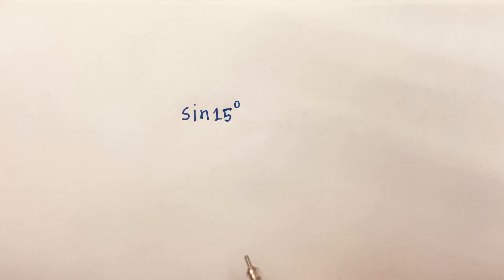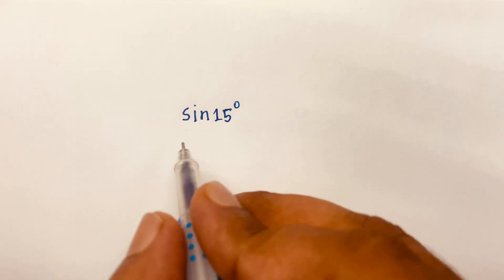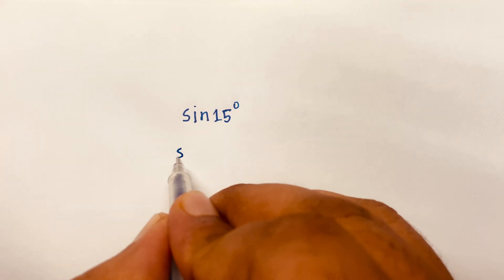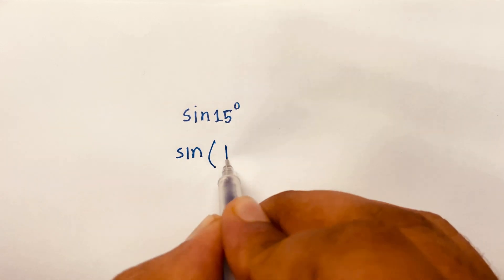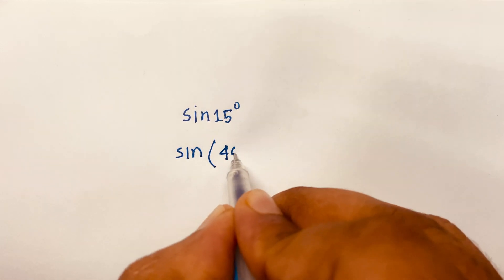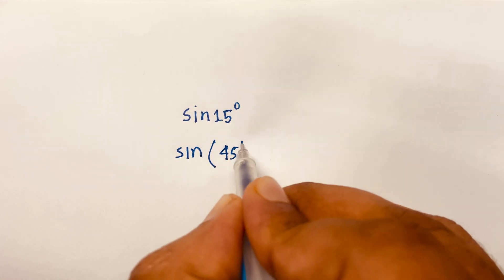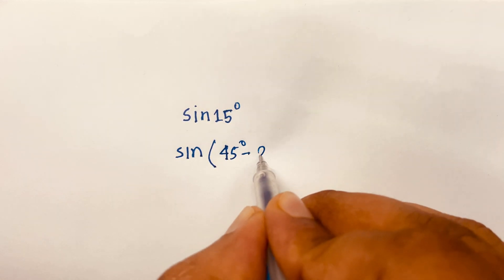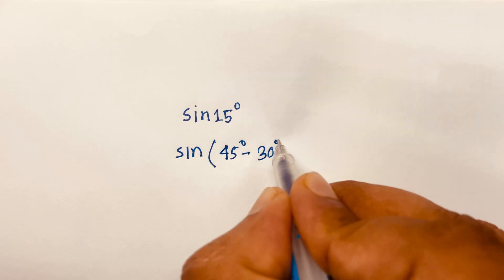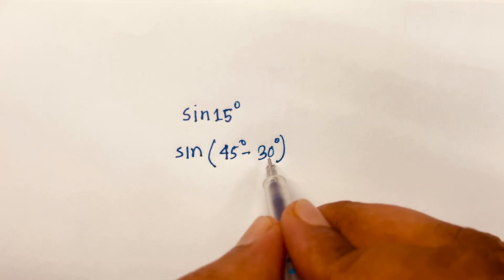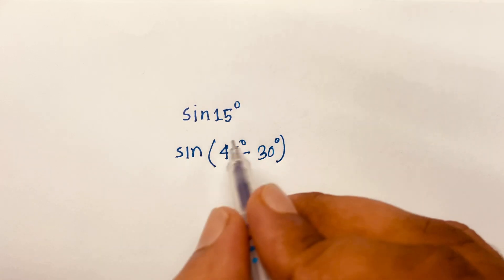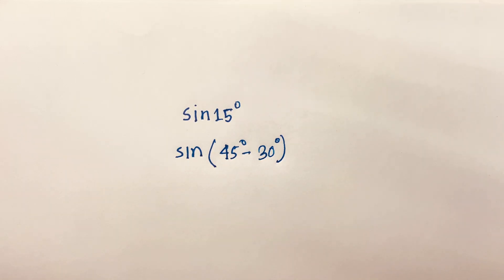How to solve sine 15 degrees? It will be sine of 45 degrees minus 30 degrees, because 45 minus 30 equals 15.